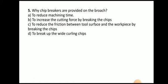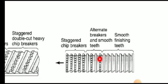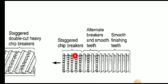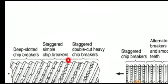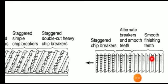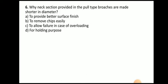Next question: why are chip breakers provided on the broach? The chip breakers are provided on the portion at the start of the broach teeth. Here you can see the chip breakers — where the teeth are non-uniform compared to the uniform finishing teeth. The answer is to break up the wide curling chips.